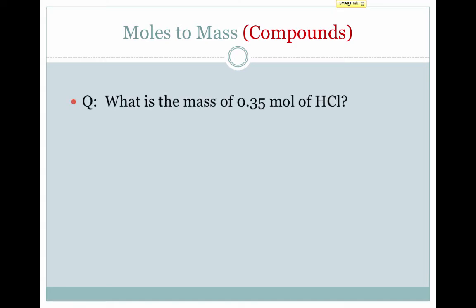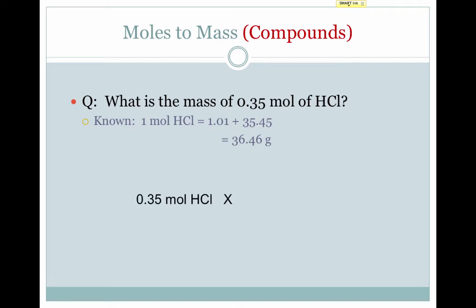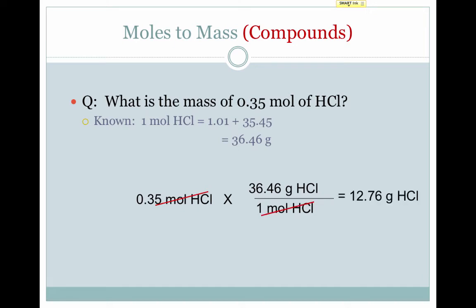If I want to know the mass of 0.35 moles of HCl, I know that one mole of HCl equals 1.01 grams for hydrogen plus 35.45 grams for chlorine. Add them together and one mole of HCl, or 6.02 times 10 to the 23rd HCl molecules, weighs 36.46 grams. So I take my given, 0.35 moles, multiply by my conversion factor, my moles cancel, and I'm left with 12.76 grams of HCl.